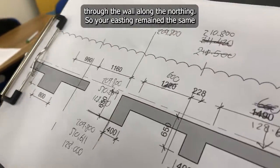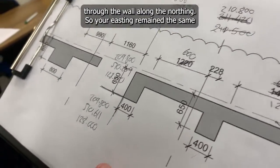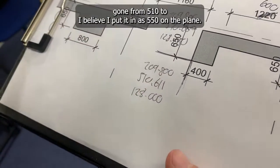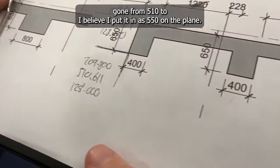You're going through the wall. Through the wall, along the northing, and then obviously my heights. Your eastings remain the same. Your northing is increased. My northing's gone from 5.10 to 5.50. That's on the plane. I worked off the offset.